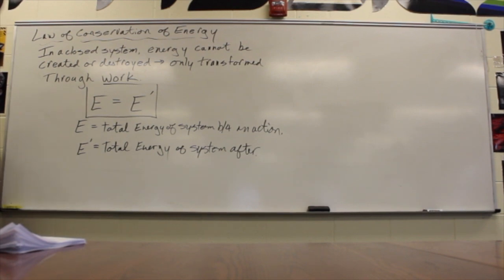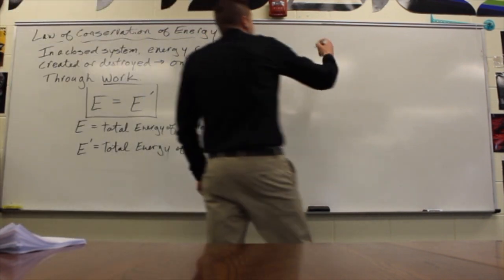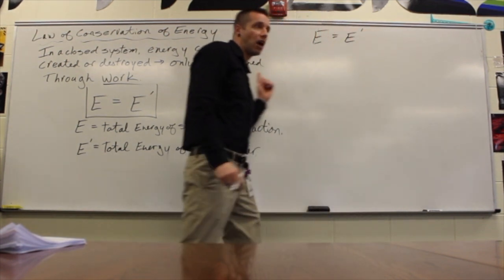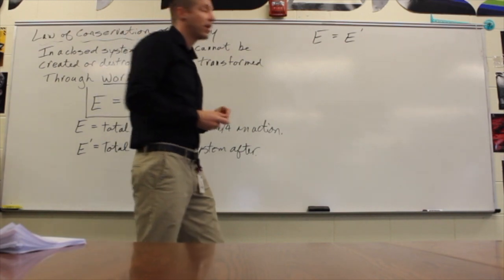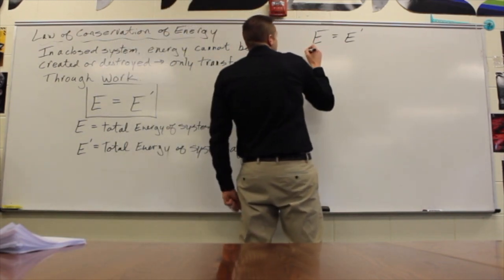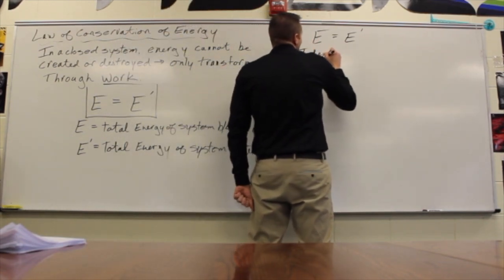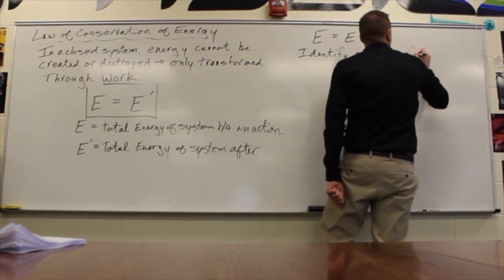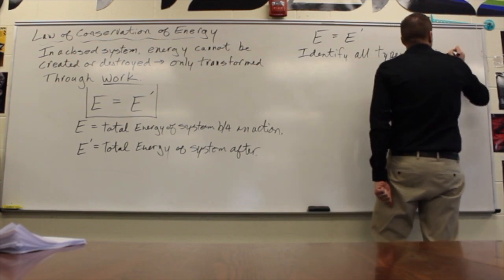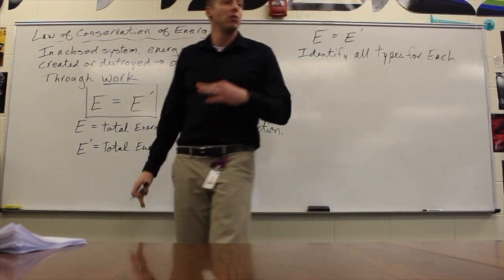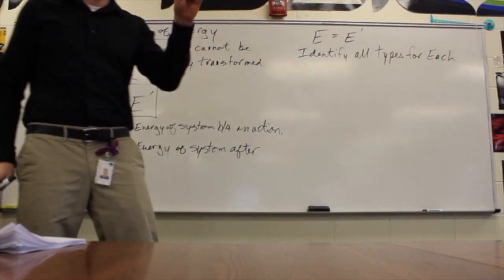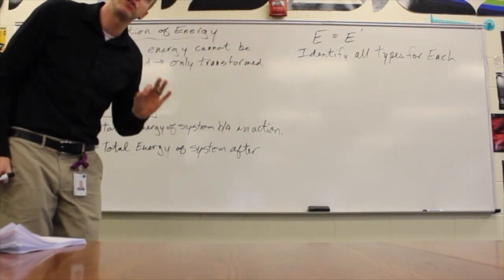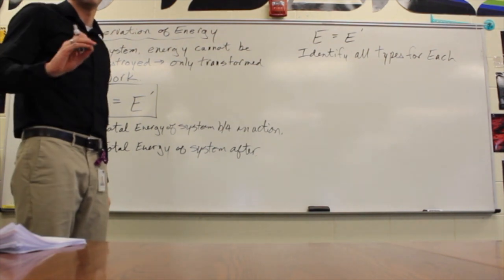The basic rule — the law — is just E equals E prime. From there, the basic process is to start with the law E equals E prime, then identify all the types of energy. For our purposes, we're going to be working at first with four different types. I want the general process first, and then I'll show you the specific details.